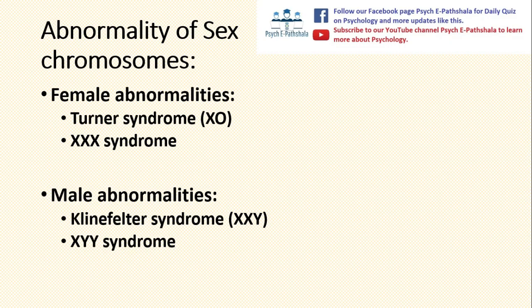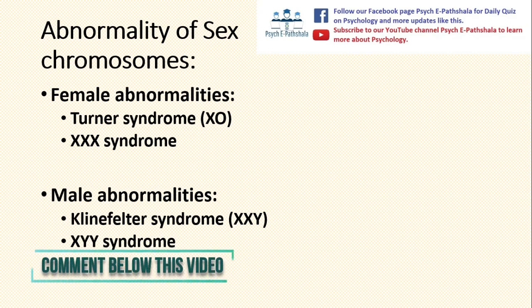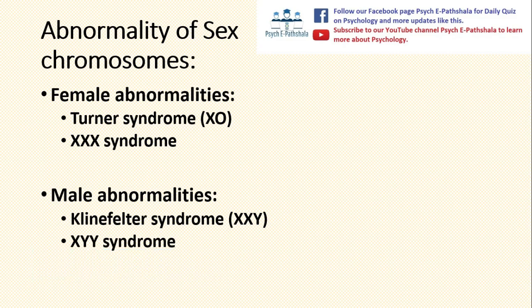Abnormality on sex chromosomes can also lead to several disorders. In females, Turner syndrome can occur where only one X chromosome is present and the other is missing. Another form is XXX syndrome, a trisomy of the X chromosome. In males, Klinefelter syndrome can occur where a trisomy of the X chromosome leads to a genetic combination of XXY. There can also be XYY syndrome, where a trisomy of the Y chromosome occurs.